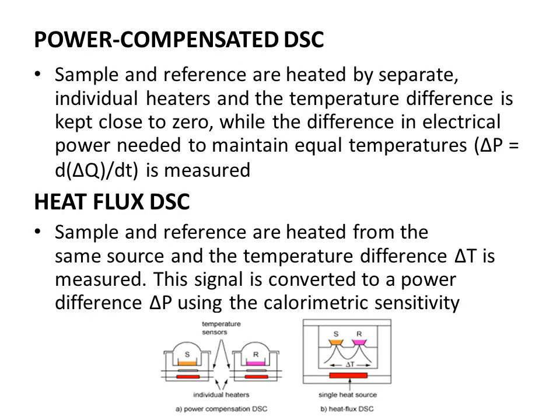In power compensated DSC, the sample and reference pans are heated separately using individual heaters. You can see in the diagram: here is the sample pan, here is the reference pan, and here are the individual heaters. Both pans are heated individually and the temperature difference is kept close to zero.